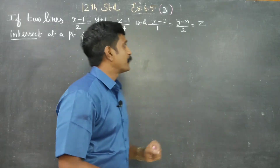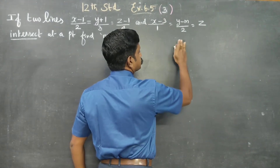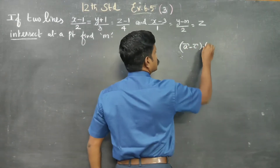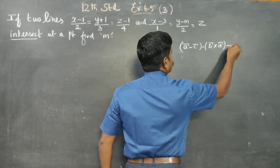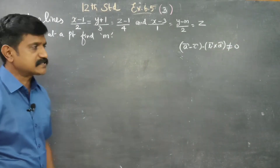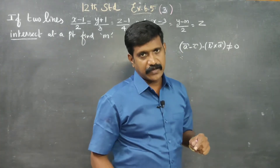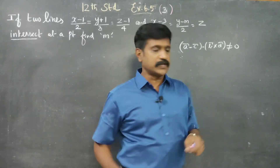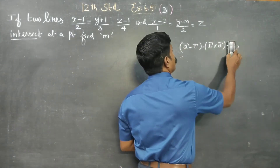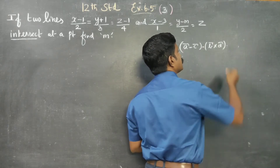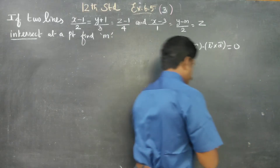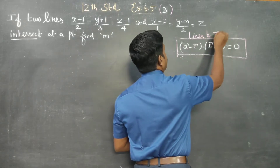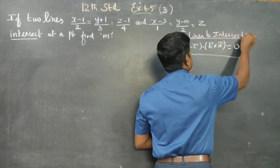The condition for skew lines is: (a-c) vector dot (b cross d) is not equal to 0. That is the condition for skew lines. If lines intersect at a point, it's not equal to 0 — meaning we need to verify the intersecting condition.